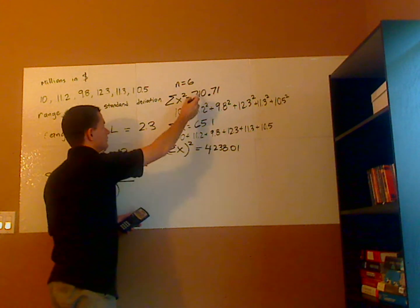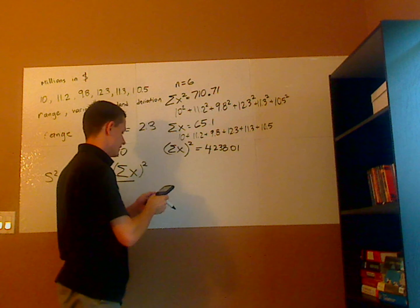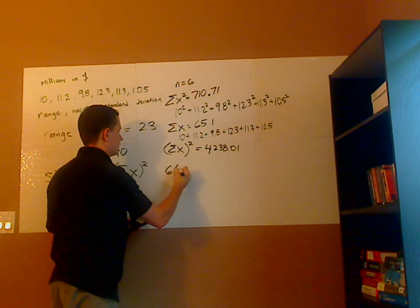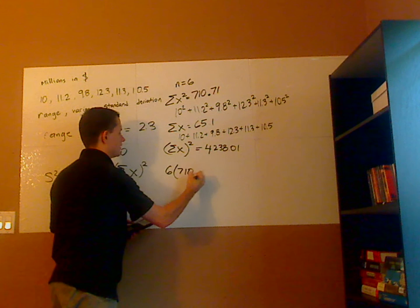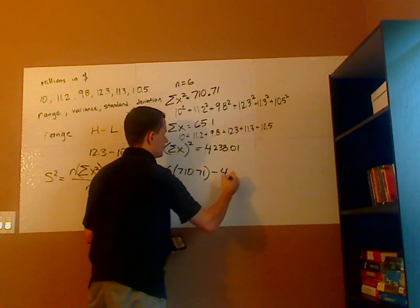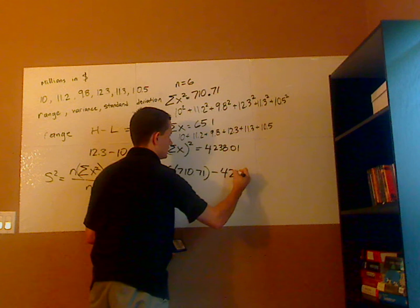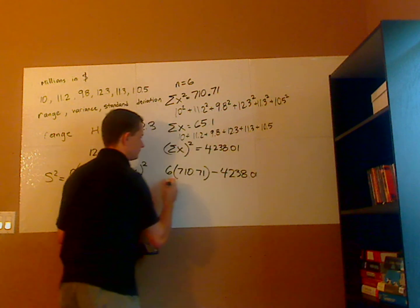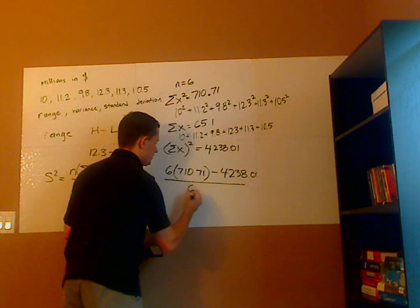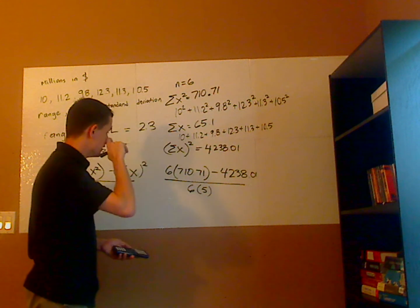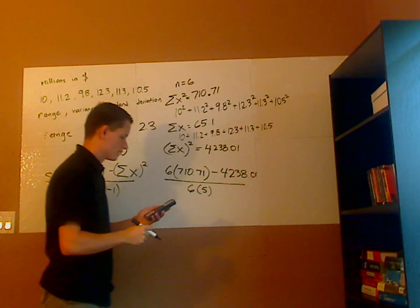Alright, so I take this amount and multiply it by... I'm just going to plug it in. So I have 6 times 710.71 minus 4,238.01 over 6 times 5, and that's going to give me the variance.